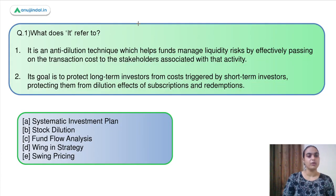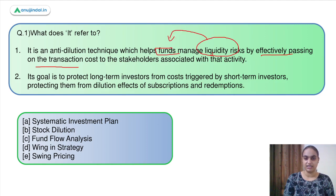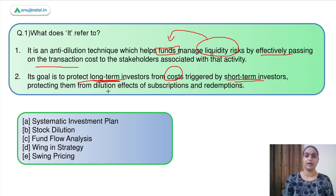Let's move on to question number one, which says: what does it refer to? We have to identify the concept being discussed based on two statements. The first says it's an anti-dilution technique which helps funds manage liquidity risks by effectively passing on the transaction cost to the stakeholders associated with that activity. The second statement says its goal is to protect the long-term investors from costs triggered by the short-term investors, protecting them from dilution effects of subscriptions and redemptions.